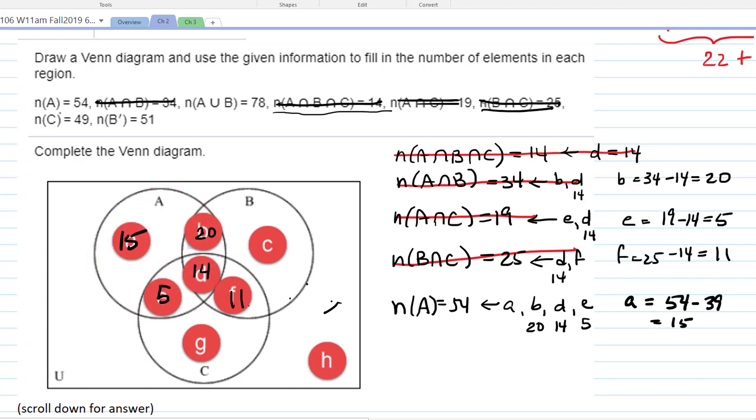They didn't tell us the number in B, but they told us the number in C. The number in C is 49, and that's regions D, E, and F, and G. So we have 5, oh, 14, 5, and 11 plus some unknown amount. So adding those together, G has to be 49 minus 30 equals 19. Is that what you got?